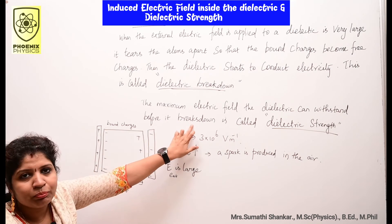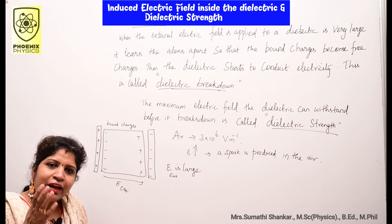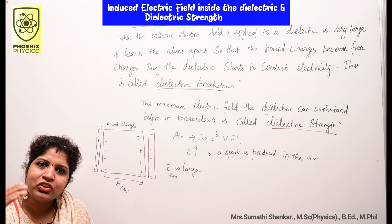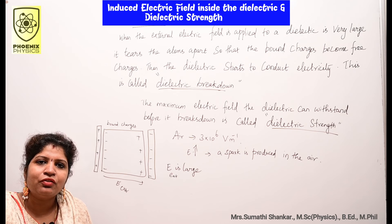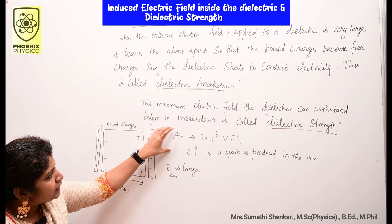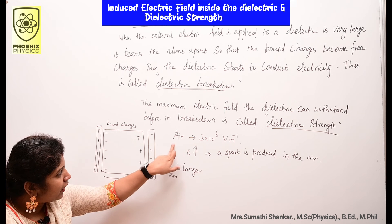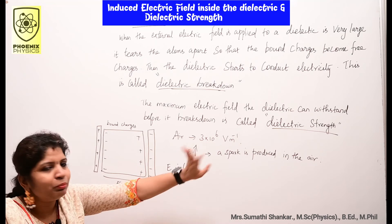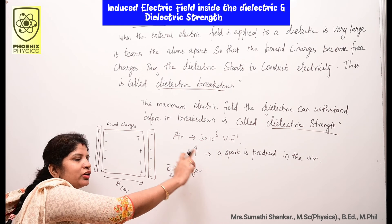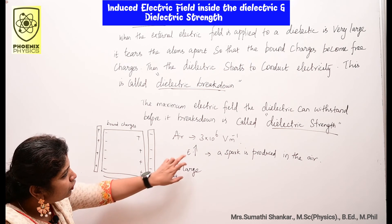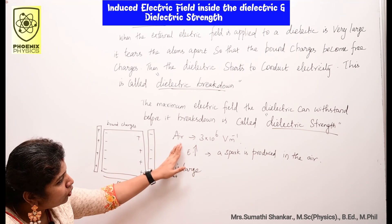The maximum electric field a dielectric can withstand before it breaks down is called dielectric strength. Each material has a different susceptibility and therefore a different dielectric strength value. For example, air has a dielectric strength of 3 × 10⁶ V/m. If you increase E beyond this value, a spark is produced in the air — dielectric breakdown occurs.